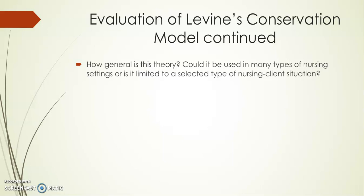Another question was: how general is the theory? Could it be used in many types of nursing settings, or is it limited to a specific client situation? Levine's model can be useful in a variety of situations and patient conditions across a lifespan. Examples include developing a protocol for minimal handling of premature infants, establishing a care plan for a family with a developmentally disabled child, a framework for wound care focusing on structural integrity, nursing care after radical hysterectomy, interventions to reduce disabling symptoms, and a framework for organizing care of individuals with chronic illness. I believe this theory is general enough to be used in many different types of nursing settings.